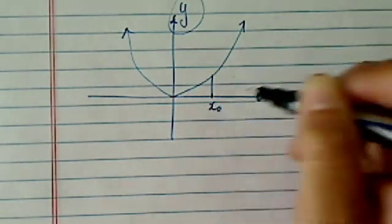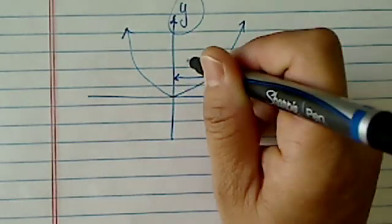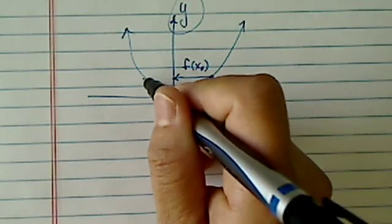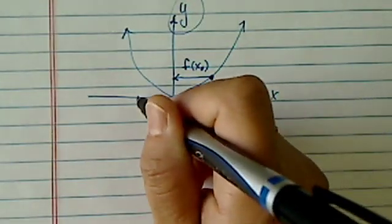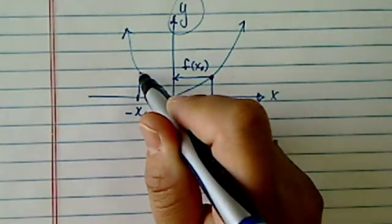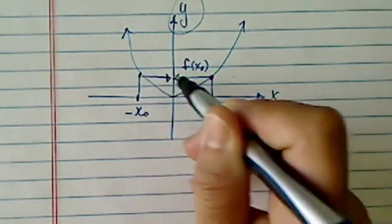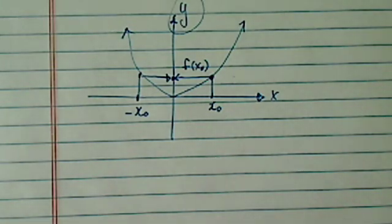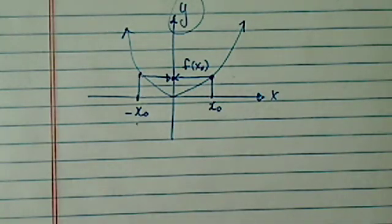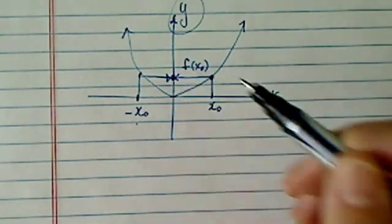An even function says, look, if you have an x0 over here, f of x0 is over here. An even function is saying, if you mirror this one over here to minus x0, go up to the function, you'll end up at exactly the same, kind of like twins. So twin one is here and twin two is over there. They have exactly the same value.